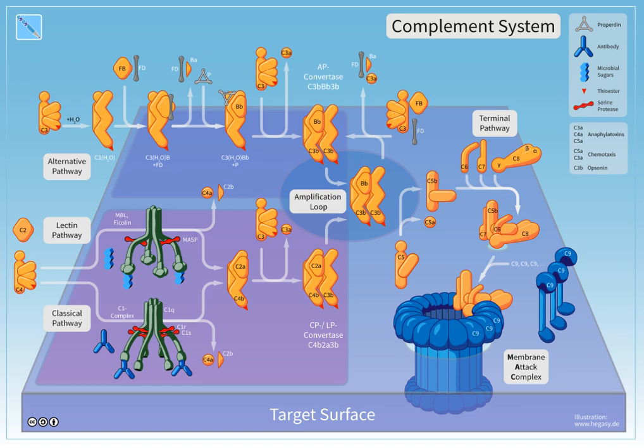Most of the proteins and glycoproteins that constitute the complement system are synthesized by hepatocytes. But significant amounts are also produced by tissue macrophages, blood monocytes, and epithelial cells of the genitourinary system and gastrointestinal tract.